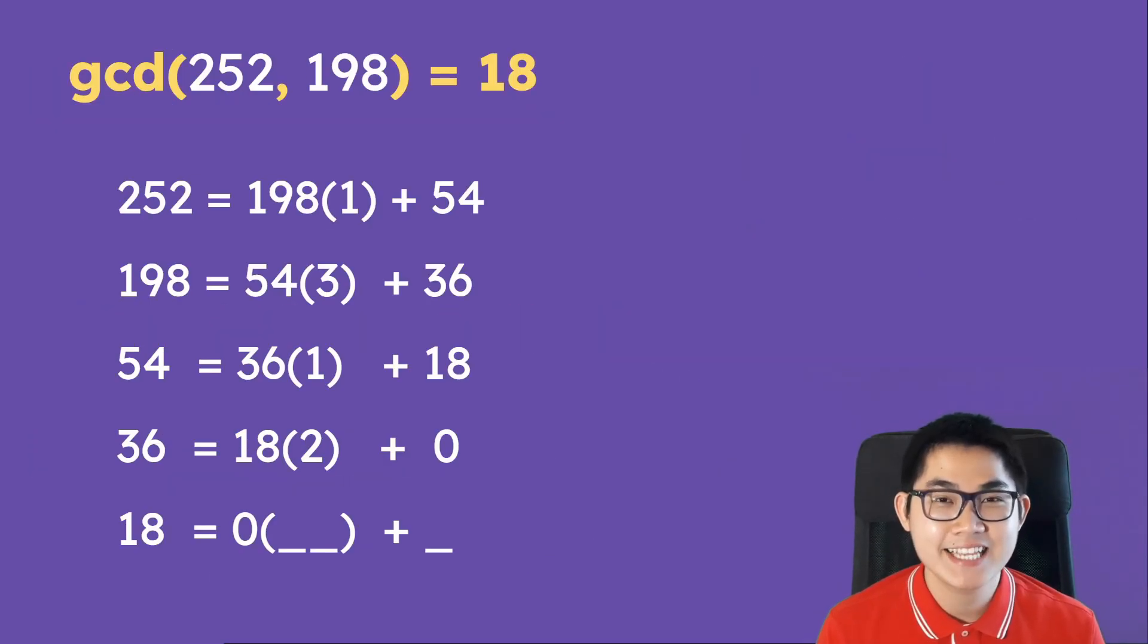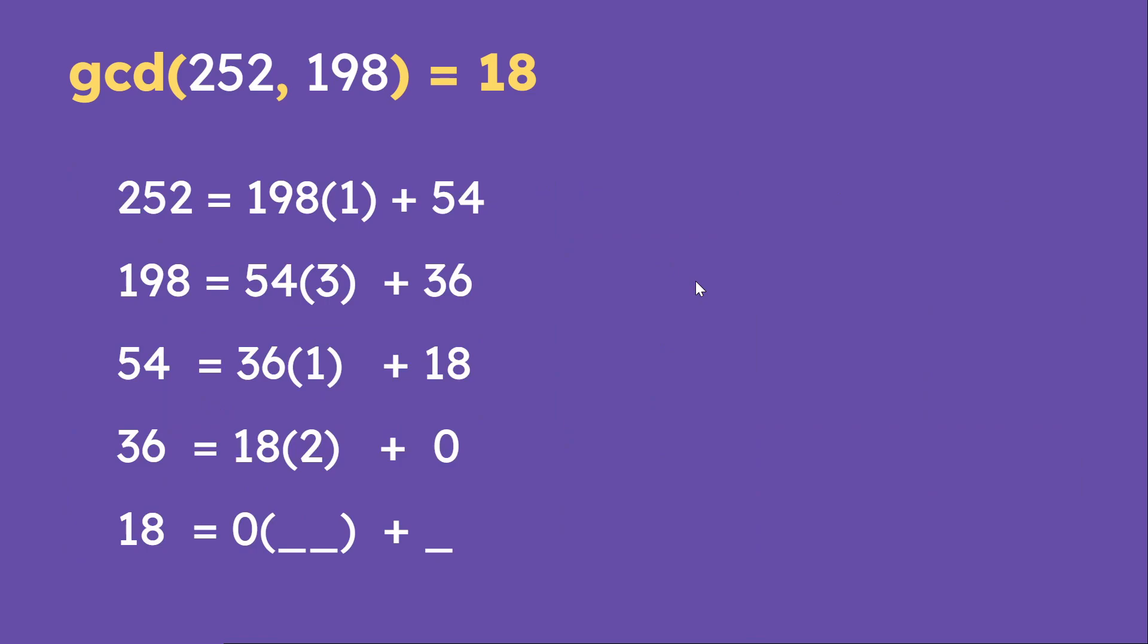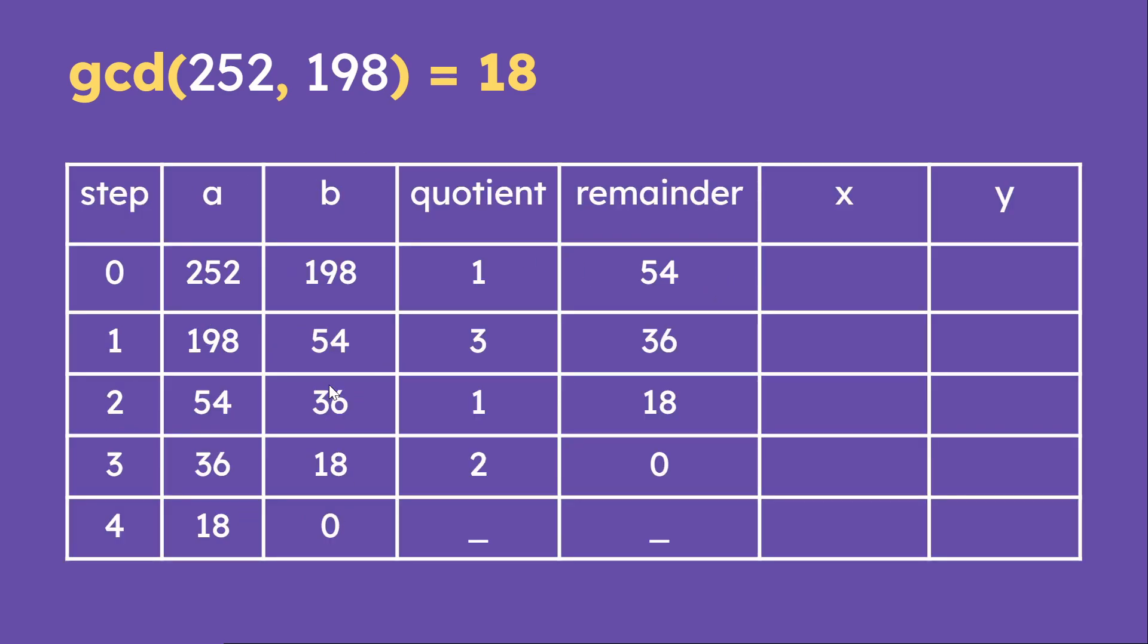So that is the extended Euclidean algorithm. Now there is a second way to do it. And if you're interested, I'm going to show you right now. We have a table like this. Sometimes your professor might ask you to fill in a table like this. And where did I get these numbers from? Well, it's just from this part. So I just take it and fill it in here.